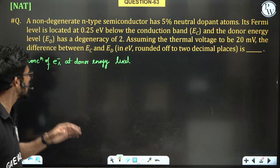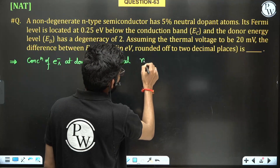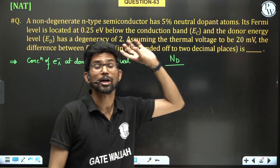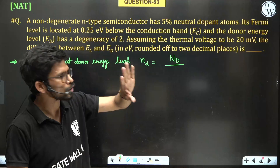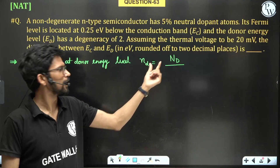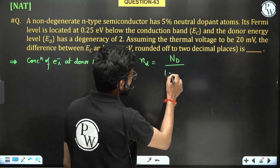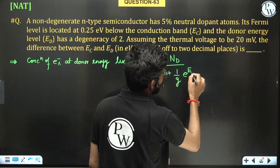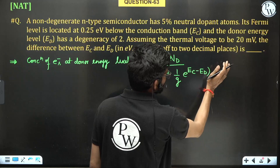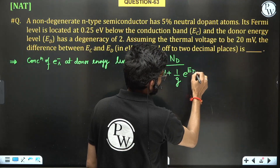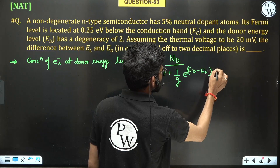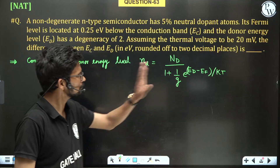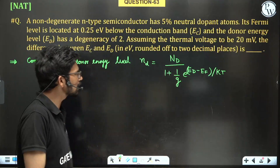If all the donor levels are not ionized, the concentration of electrons at the donor energy level is given by ND divided by 1 plus (1/G) times e to the power (ED minus EF) upon KT, where ND is the total doping concentration and G is the degeneracy factor.